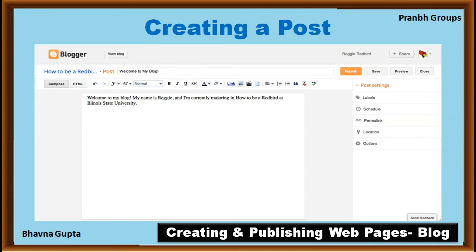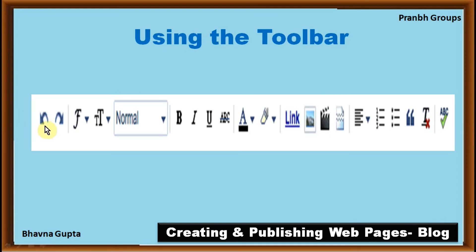Third step — creating a post. Type the title of your post in the post title box, then type your post content in the post field below. You can use the toolbar to format your post. The toolbar includes: undo, redo, change font, change font size, font spacing, bold, italic, underline, strikethrough, font color, highlighter, link, insert a picture, insert a video, insert a jump break, alignment, numbering, bullet, code, and a button to remove any formatting.